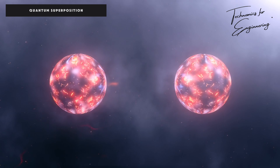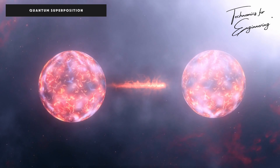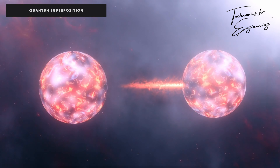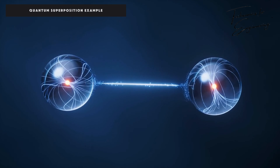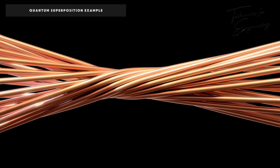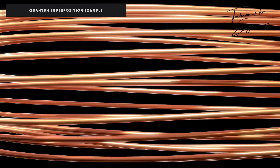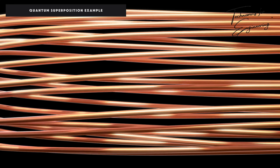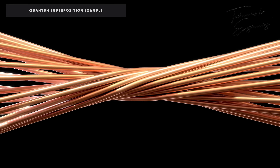No matter how far apart they are, once the state of one is determined, the state of the other is immediately determined. For example, imagine two electrons are entangled. If you measure the spin of the first electron and find that it is spin up, the spin of the second electron is immediately determined to be spin down.